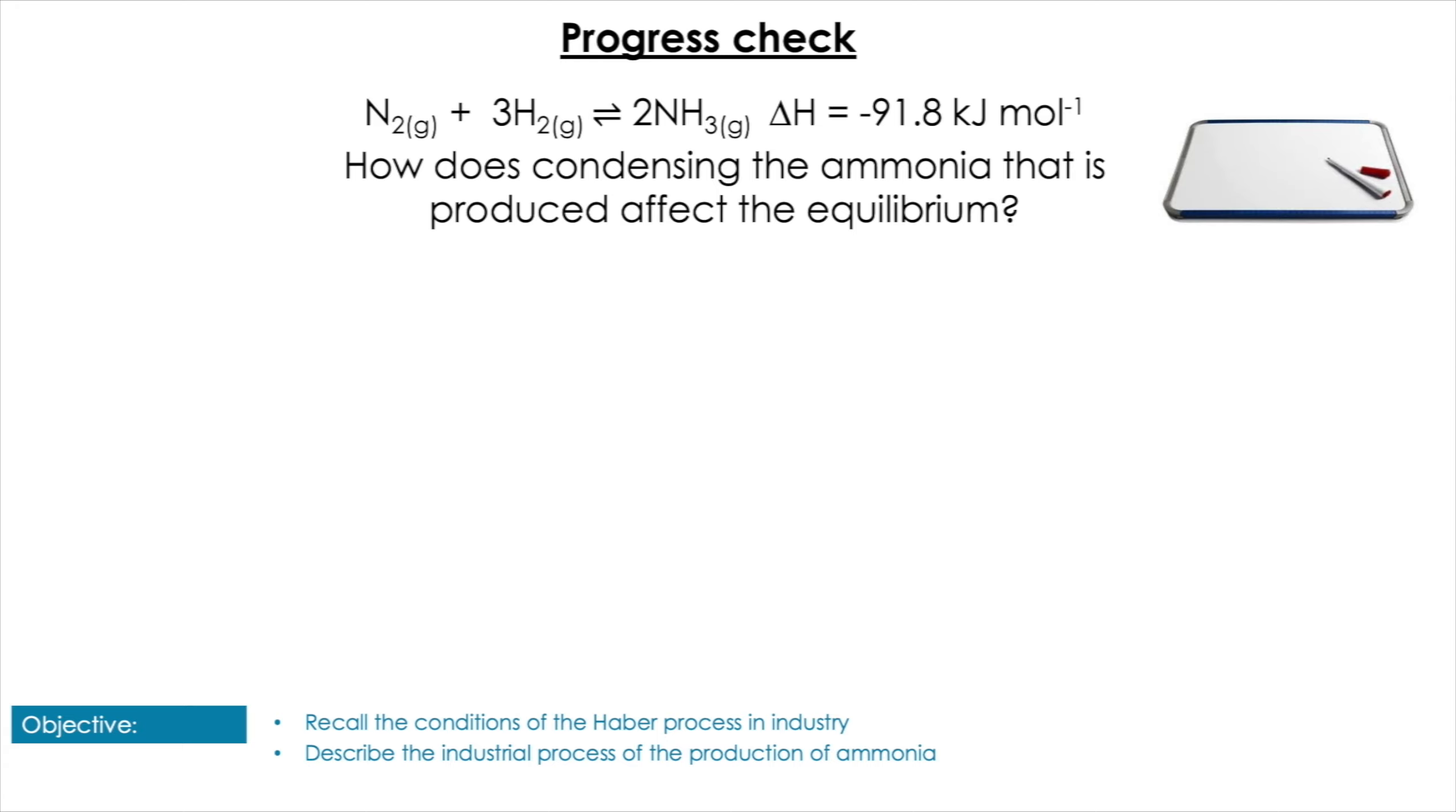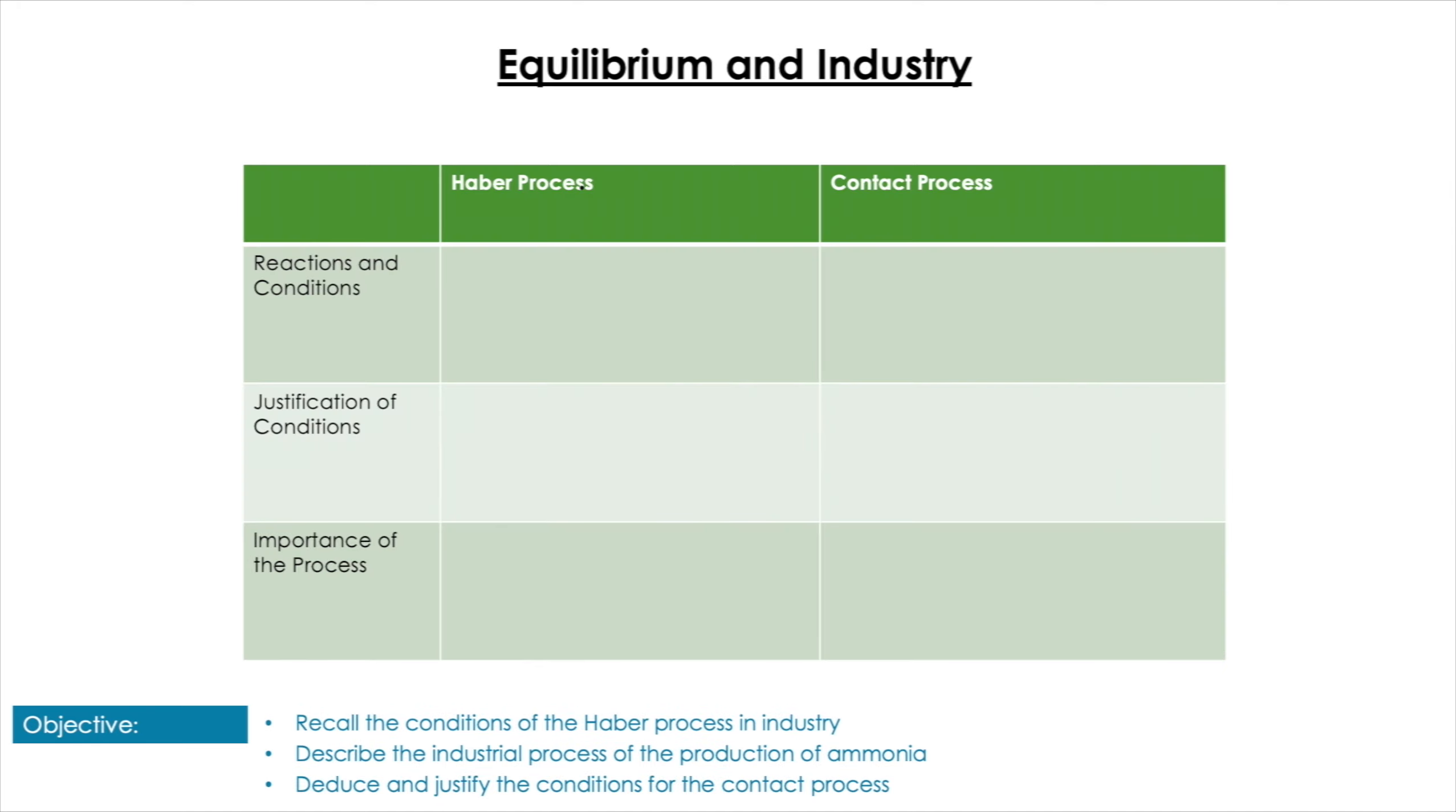Leading on from that, how does that condensation affect the equilibrium? Pause the video here to give yourself some time. Of course, removing the ammonia is going to shift the equilibrium to the right-hand side, as we're removing the concentration of the product, and therefore the reaction will shift to produce more ammonia. Okay, so we've kind of covered the Haber process now.